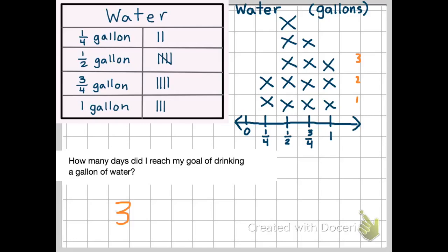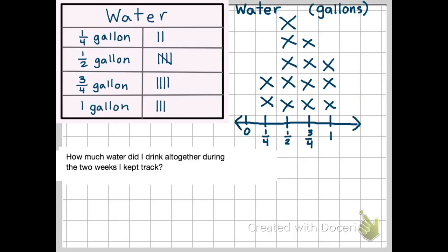Our last question, using this measurement data, is how much water did I drink altogether during the two weeks I kept track? So this one's going to take a little bit more work. So we're going to need to add all these up. This is going to require several different steps.